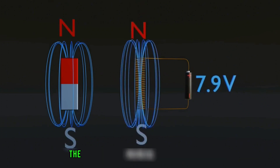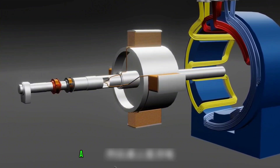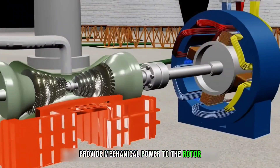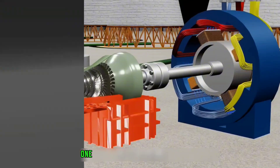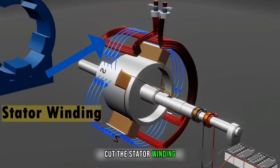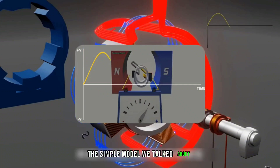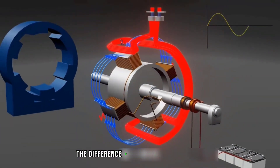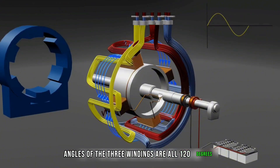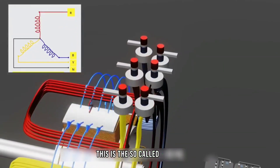We install a winding on the rotor that can generate a magnetic field, also called a field winding. When DC current is applied, a constant magnetic field is generated. We then use a turbine to provide mechanical power to the rotor. For better observation, we first show only one set of coils on the stator winding. When the rotor rotates, the magnetic field lines cut the stator winding, and the stator winding produces an electric waveform from the change in magnetic flux — the same as the simple model discussed at the beginning. The difference is that now we have three sets of windings on the stator, with phase angles of 120 degrees each. When the rotor rotates, the three windings produce electricity at the same time — this is the so-called three-phase power.